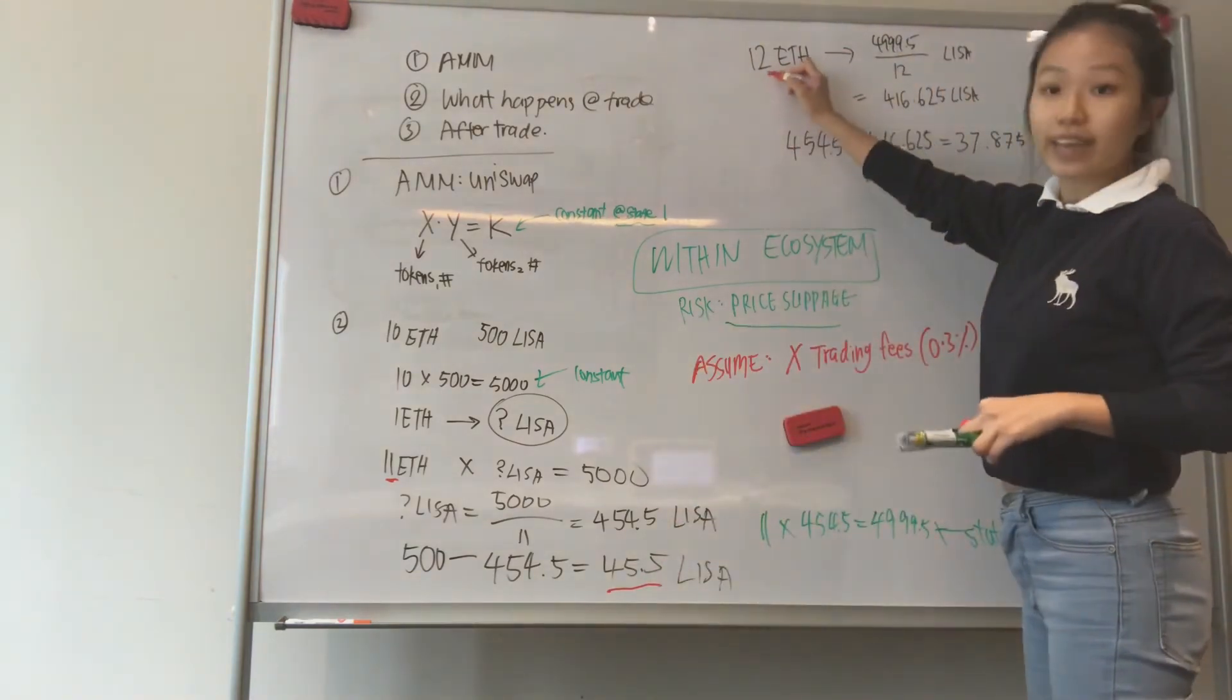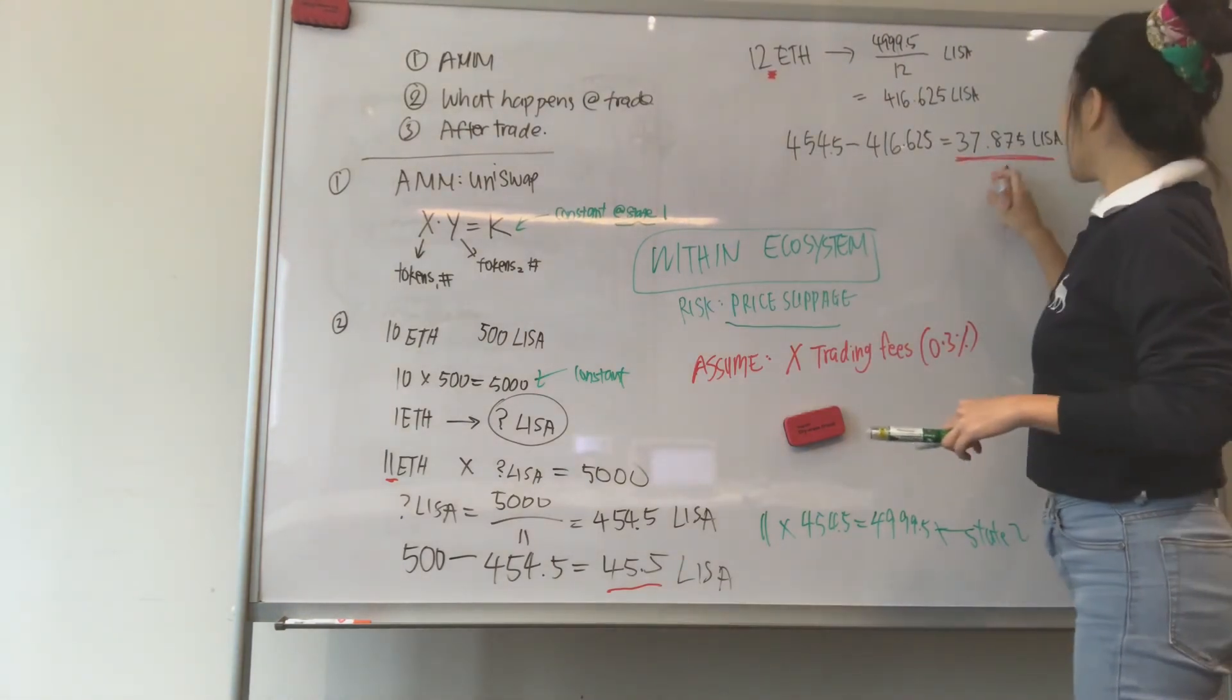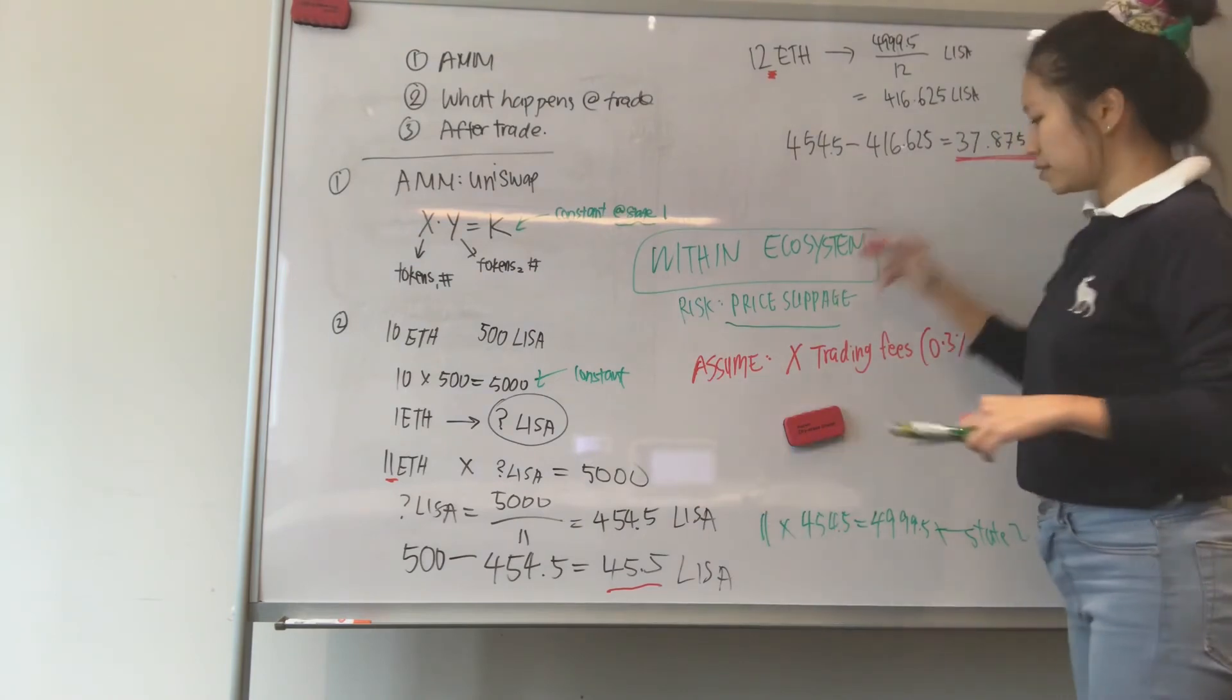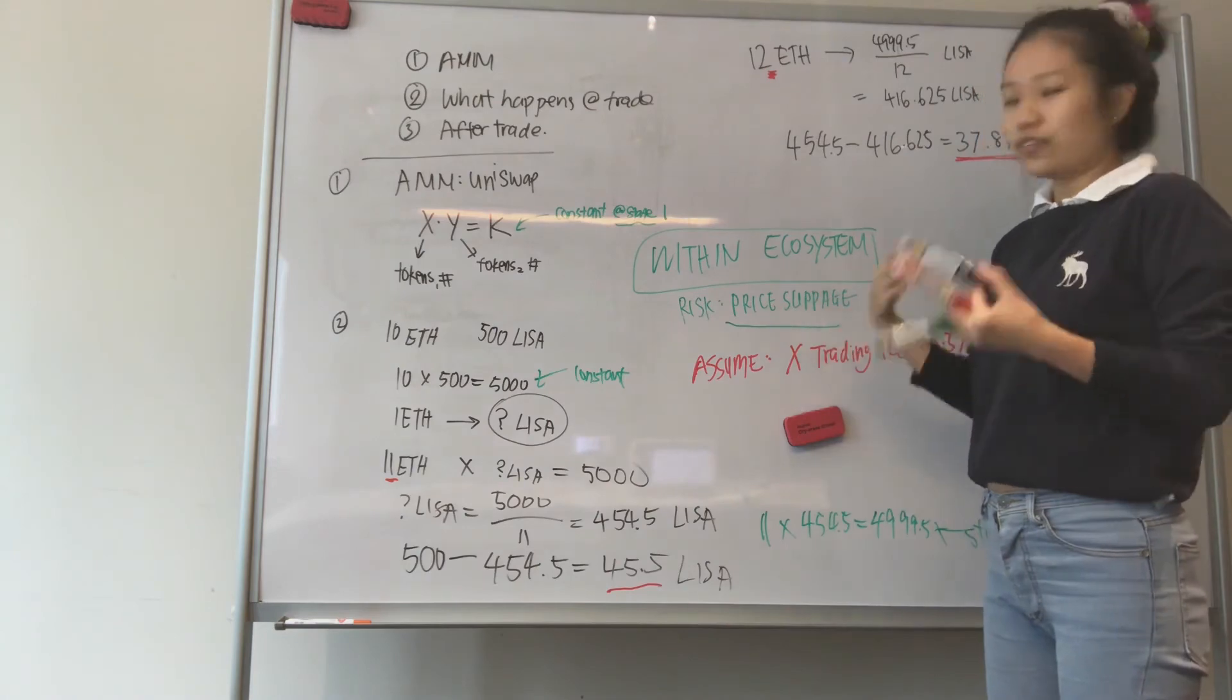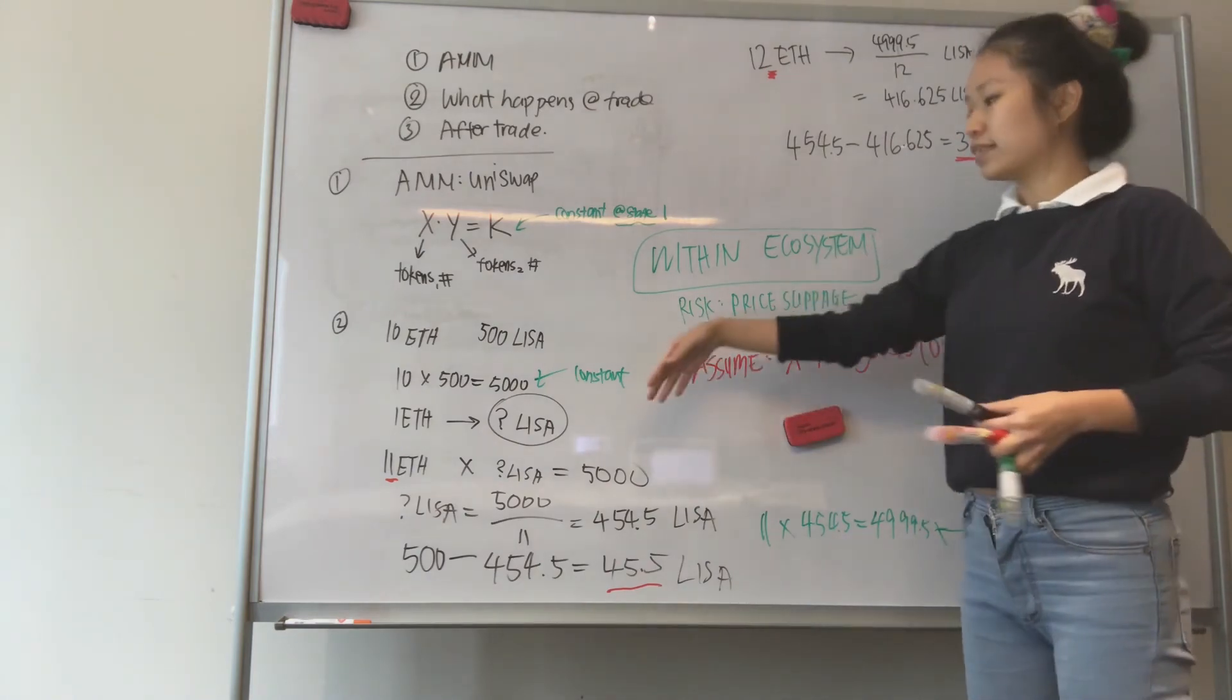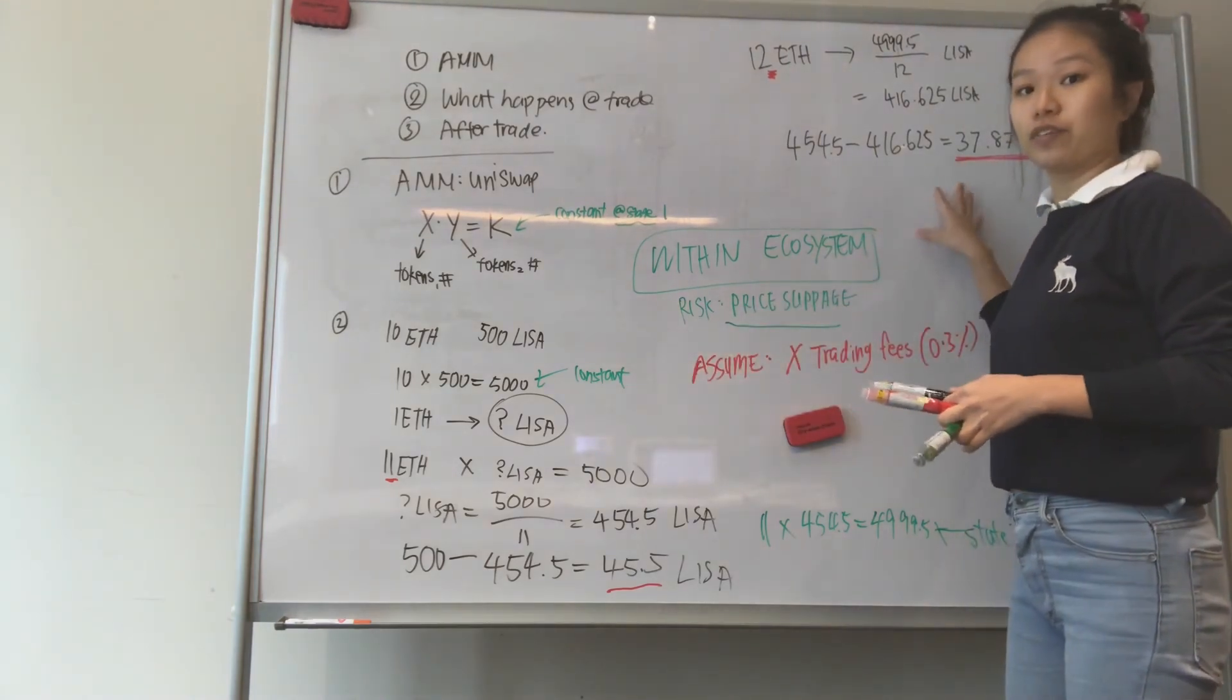Now if you are the second one that comes in, you have only 37.875 tokens. So there's a difference in price. So that's one... It's not really a risk. It's more like that's how the trade works, right? Because there's less supply available. And so you don't get as much out of it for the same thing.